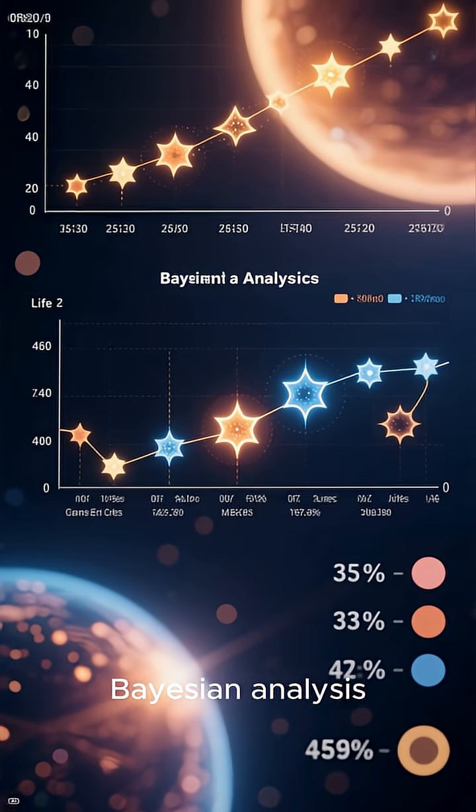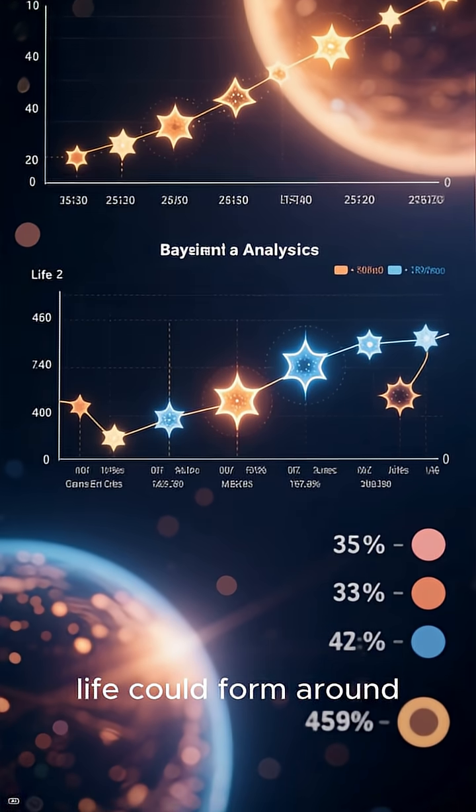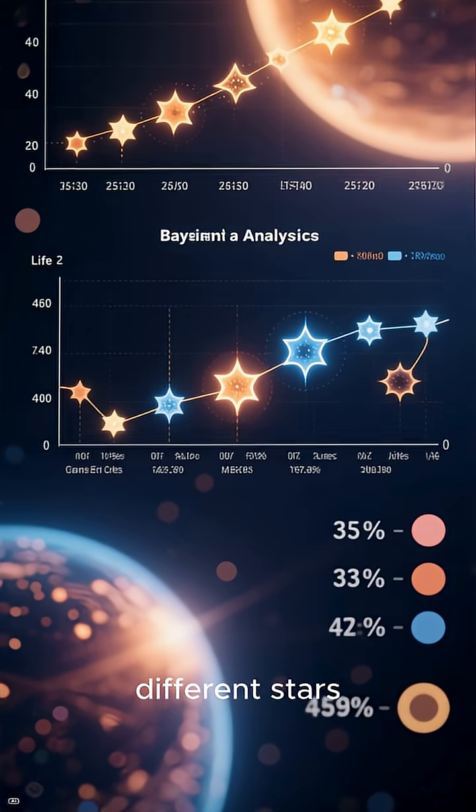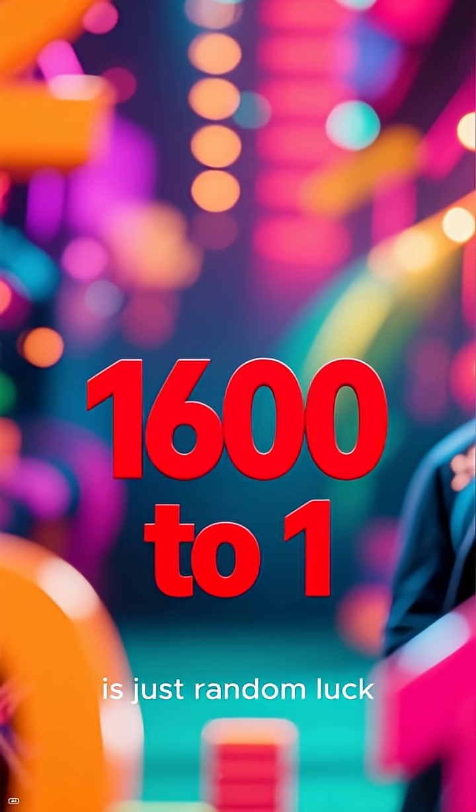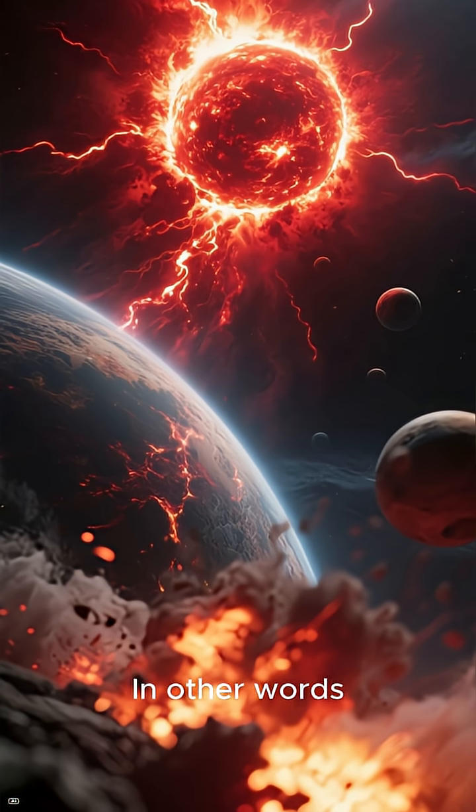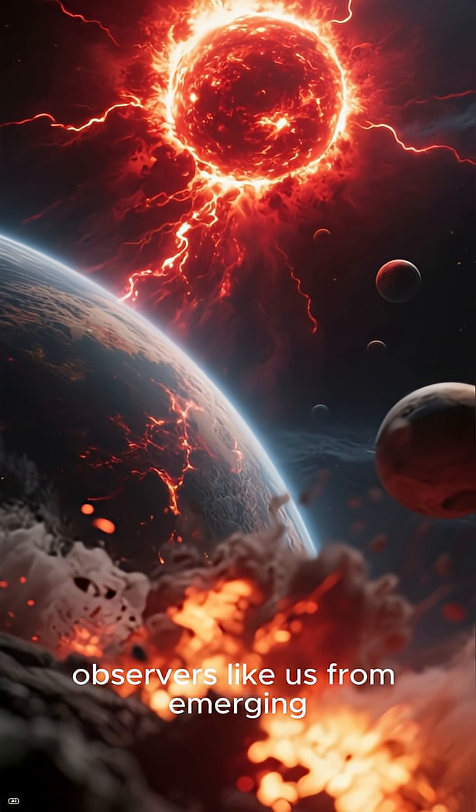Kipping ran a detailed Bayesian analysis, comparing the odds that intelligent life could form around different stars. The results? The chance that our existence is just random luck, 1600 to 1 against. In other words, something about red dwarfs probably prevents observers like us from emerging.